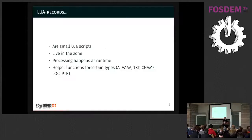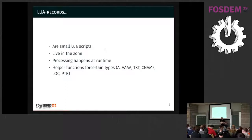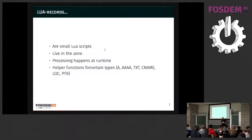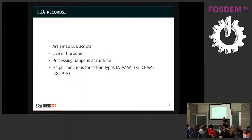LUA records are very tiny LUA scripts embedded in the zone. The processing happens at runtime, so there are no pre-flight things you need to do before provisioning the zone — you just put the LUA in there and it works. We have a bunch of helper functions defined: for certain types like A and quad-A, there is if-port-up, which is an IP thing. For TXT, we have some geo location things. If you use GOIP, we can actually send you the location record of where we think your resolver is.